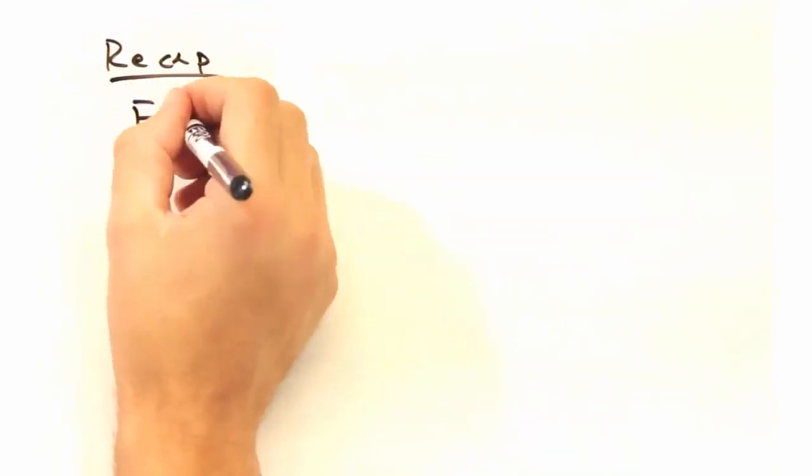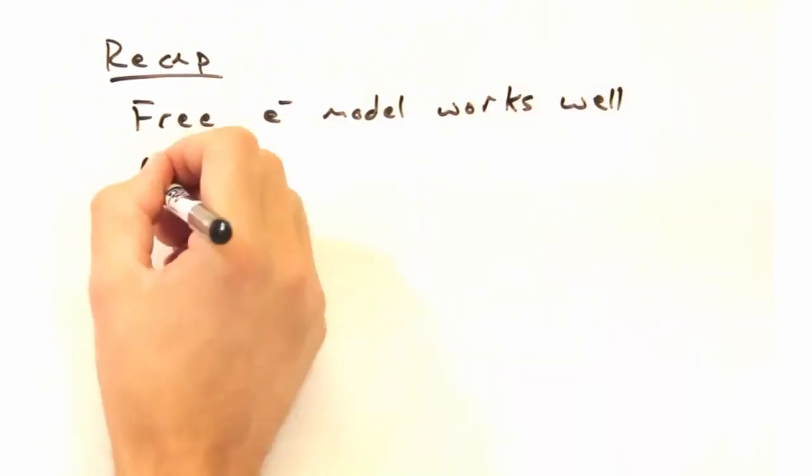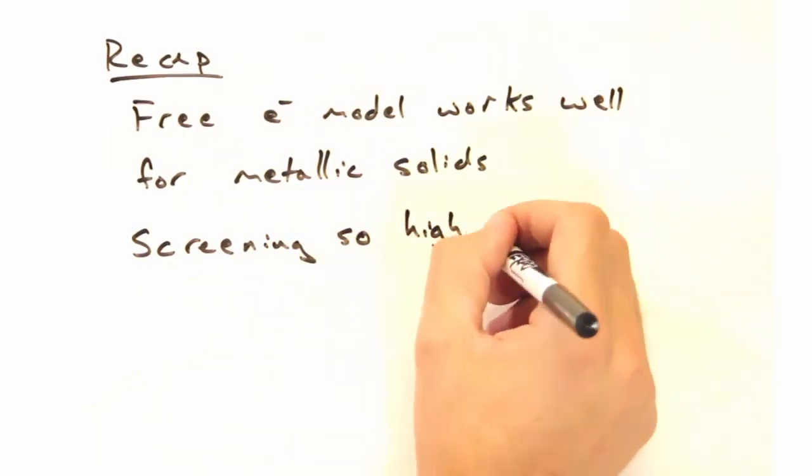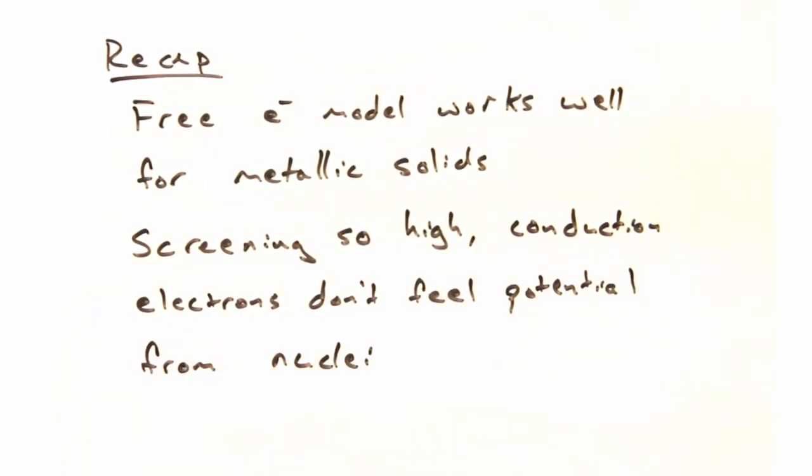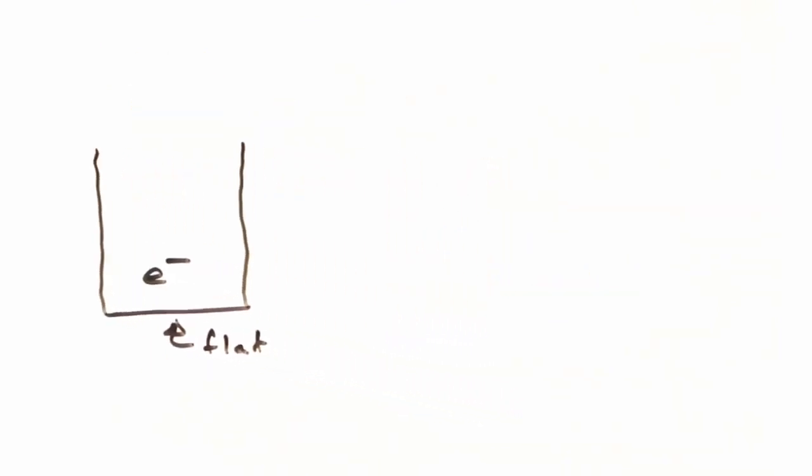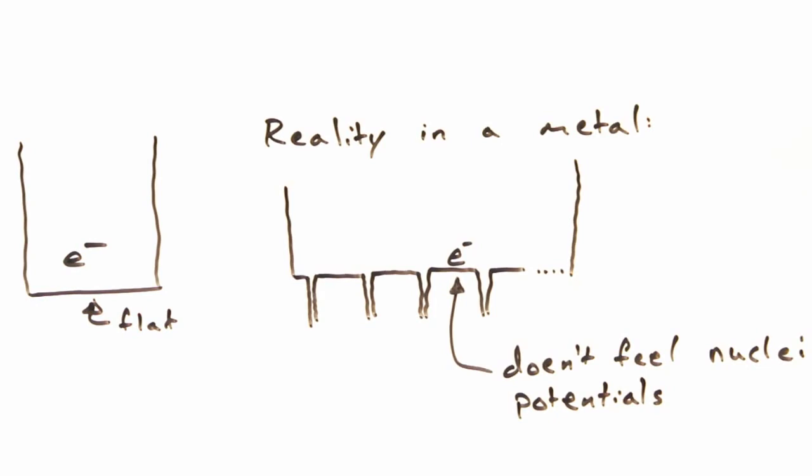Okay. So as a recap, the free electron model works well for solids because screening is so high that the conduction electrons don't feel the potential from the other atoms. So when we invoked a flat bottomed box, that arose from shielding the nucleus from the free electrons. Who knew it would really be that simple?